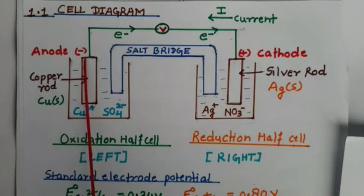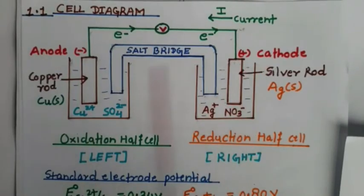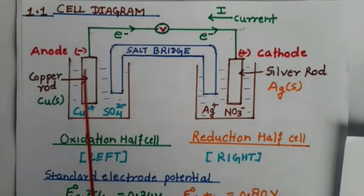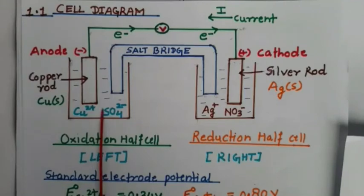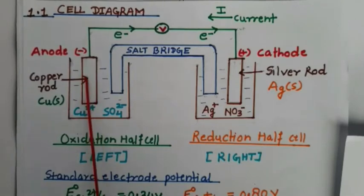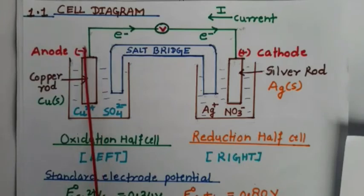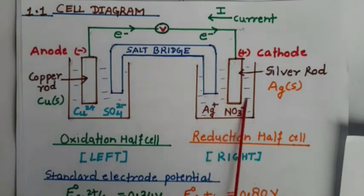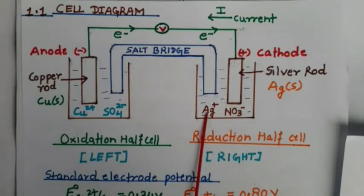The anode carries a negative charge and the cathode carries a positive charge. The negative charge at the anode develops due to the loss of electrons from the copper electrode as copper atoms are oxidized to copper ions. Consequently, this electrode develops a negative potential relative to the solution. At the cathode, silver ions gain electrons from the electrode and are reduced to silver metal, making the electrode positively charged.